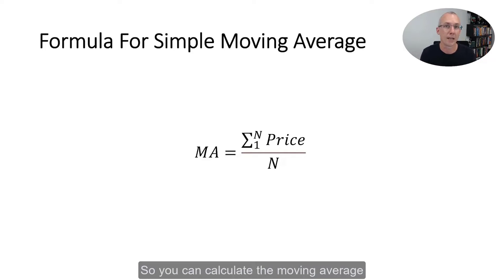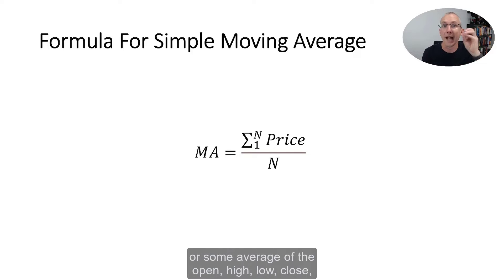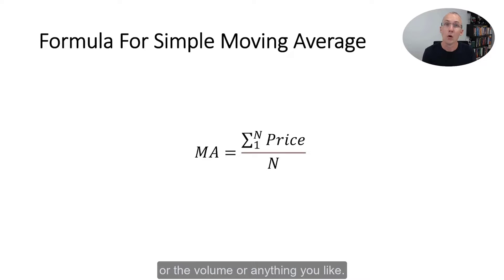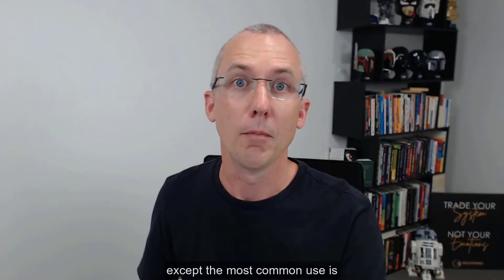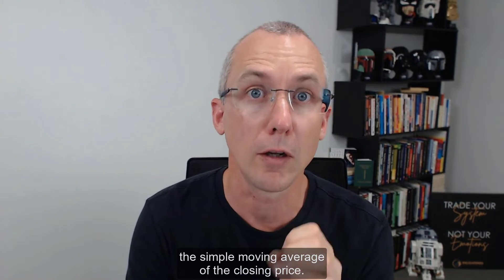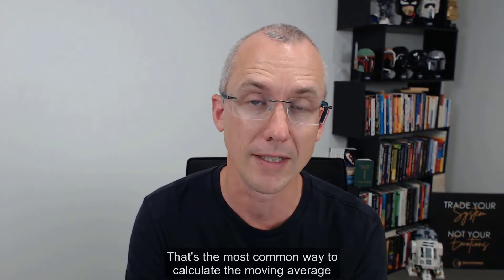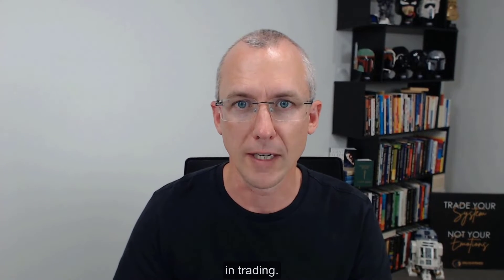You can calculate the moving average of the closing price, the opening price, the high, the low, or some average of the open, high, low, close, or the volume or anything you like. You can apply this simple moving average to pretty much anything on your chart, but the most common use is to calculate the simple moving average of the closing price.